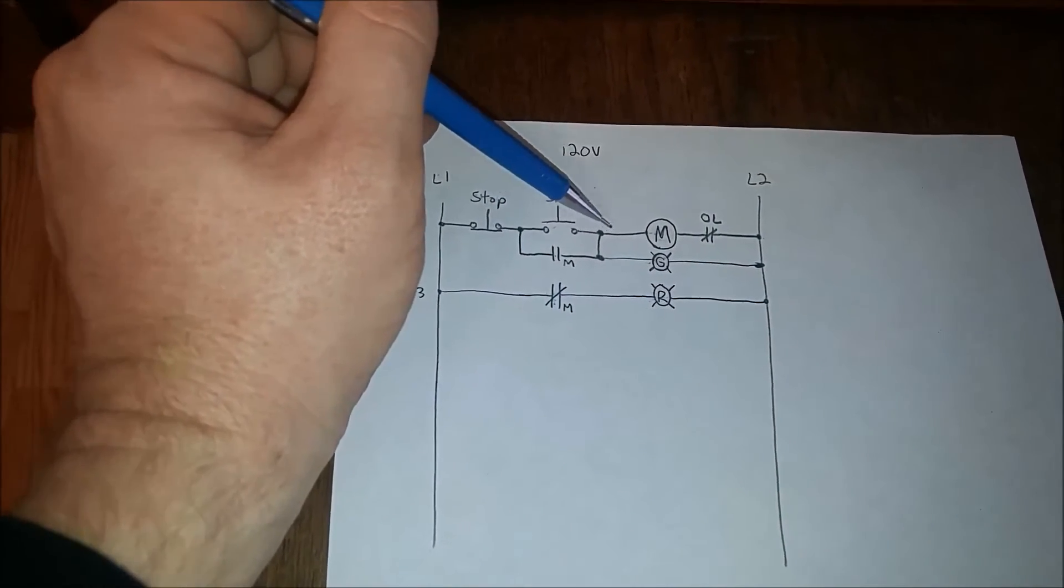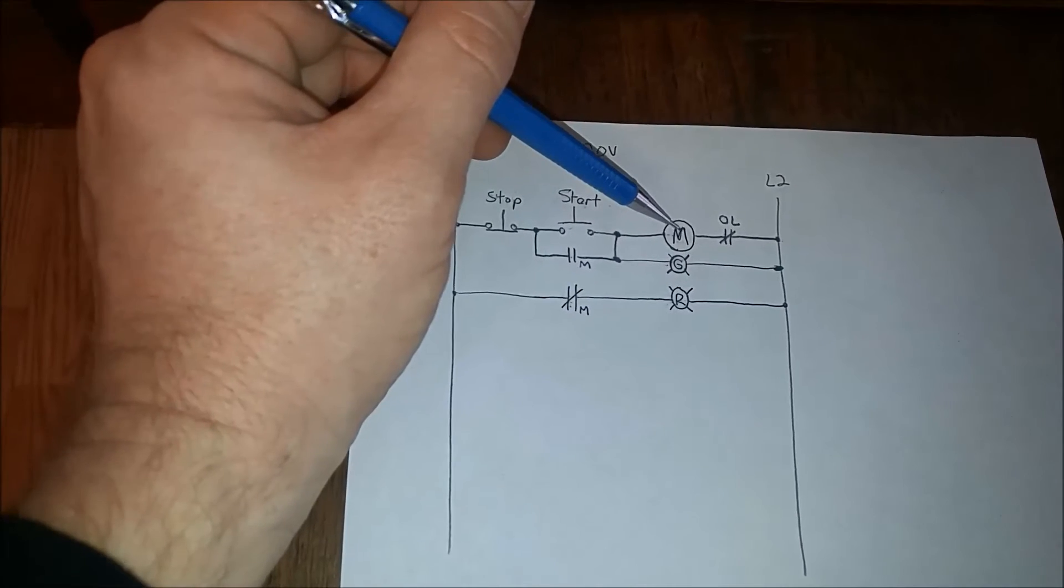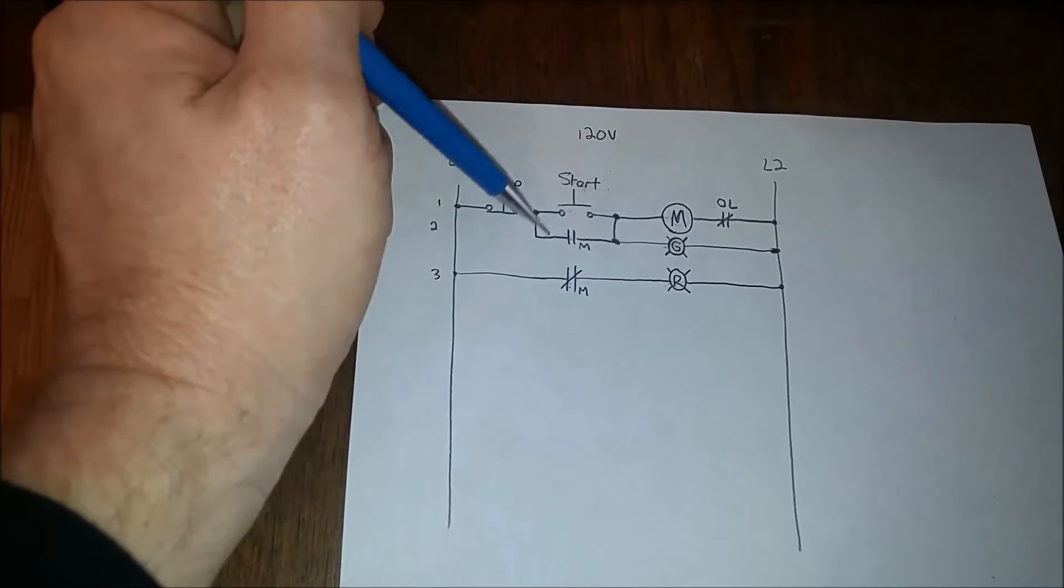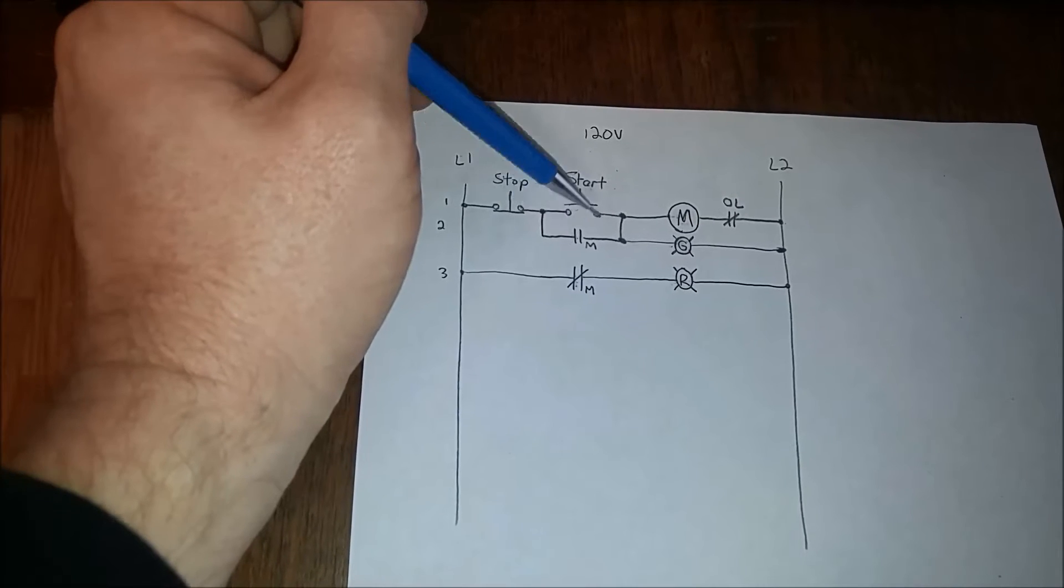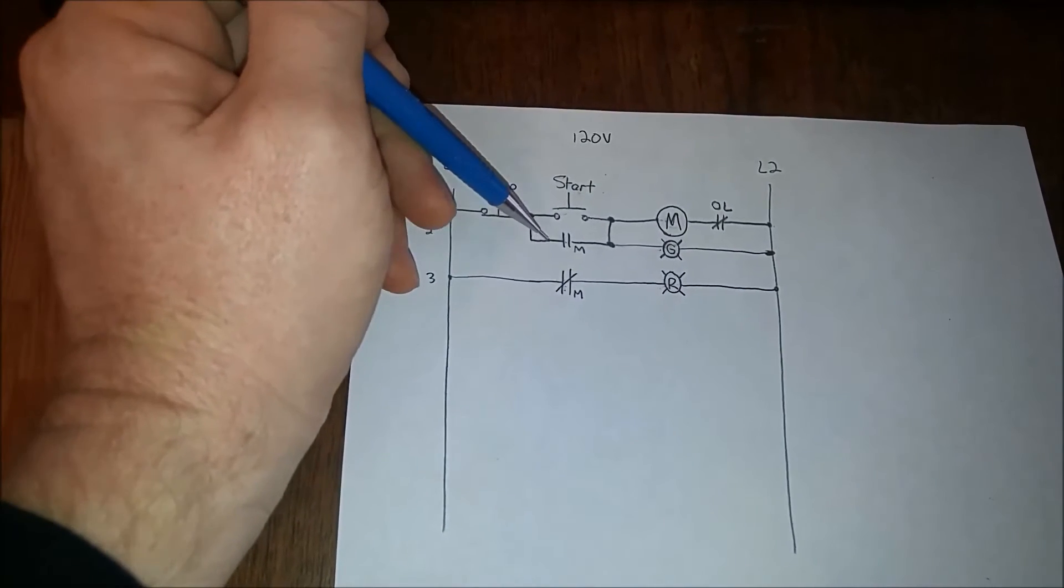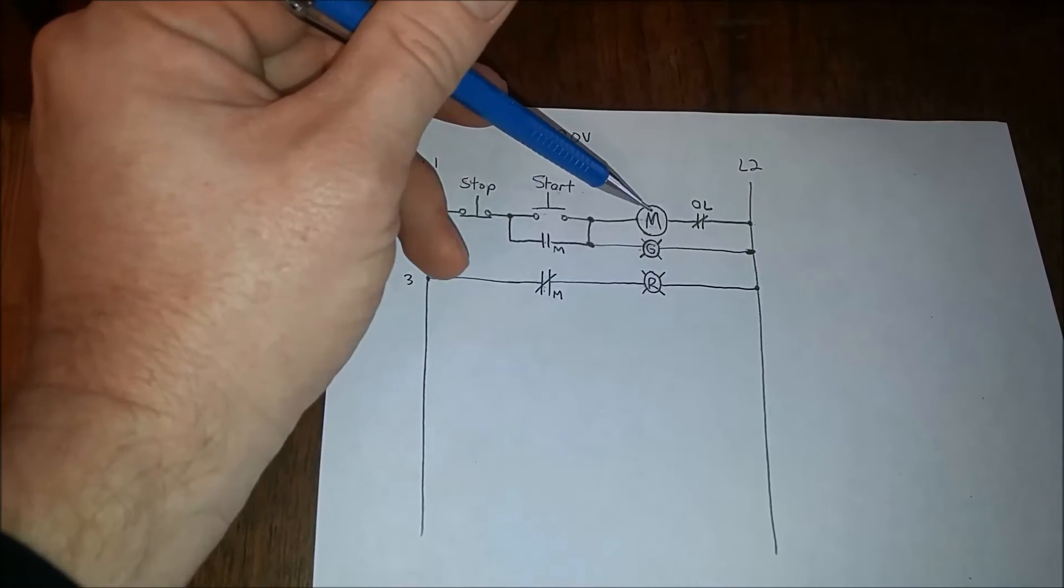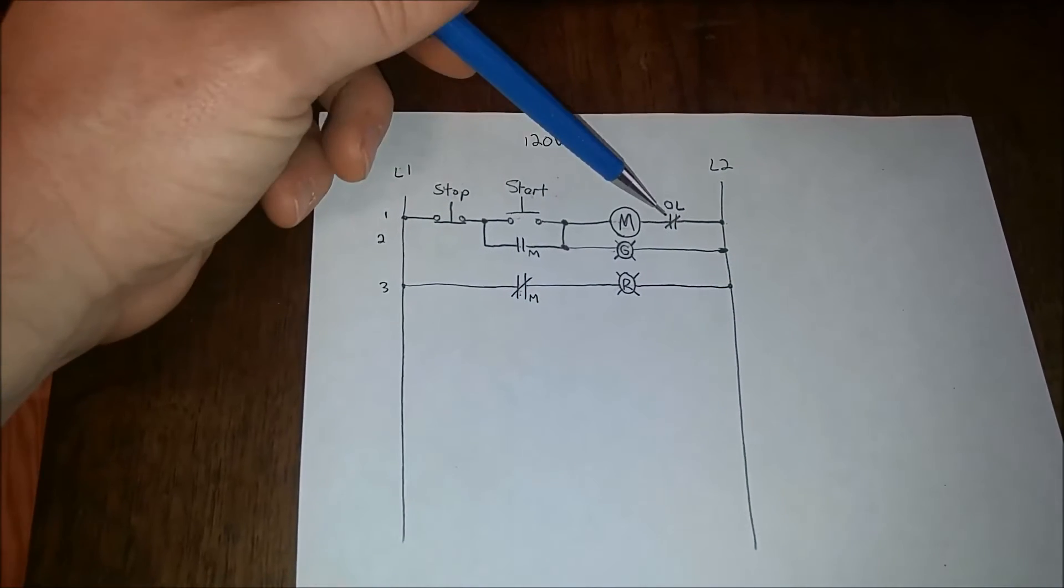It'll continue across, it'll energize the coil. Now when the coil is energized, it will close this contact so that the power can then bypass the switch and power both the motor control coil, and it continues through here and the green LED which continues through here.